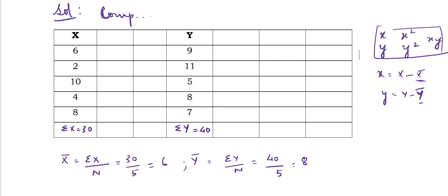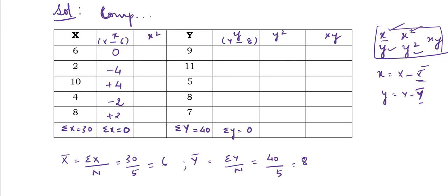Now find small x = x minus 6 and small y = y minus 8. For small x: 6−6=0, 2−6=−4, 10−6=+4, 4−6=−2, 8−6=+2. Total is 0 — when taking deviations from arithmetic mean, the total will always be zero. For x²: 0, 16, 16, 4, 4 — so submission of x² equals 40.